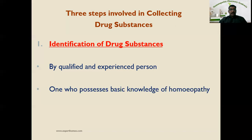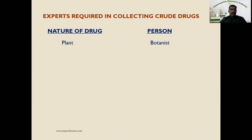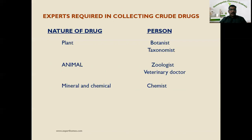There should also be one person having basic knowledge of homeopathy. The experts required depend on the nature of the drug. For vegetable sources, a qualified botanist or taxonomist identifies the correct plant species. For animal sources, a zoologist or veterinary doctor is needed. For mineral or chemical sources, a chemist, mineralogist, or metallurgist should be present for proper identification.